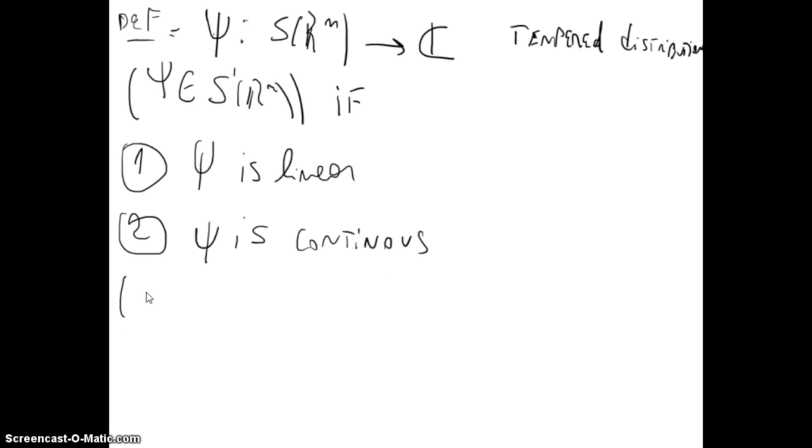And that is to say, for any sequence of functions φ_j in S(R^n) such that φ_j goes to 0 as j goes to infinity, then...